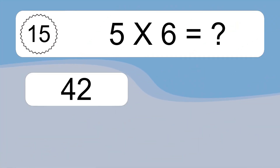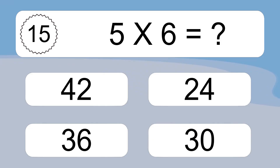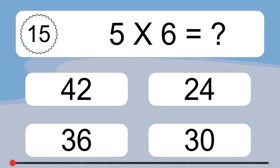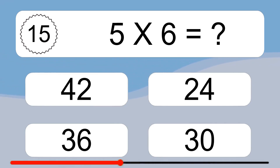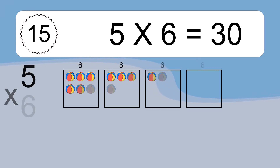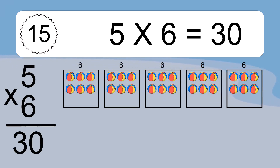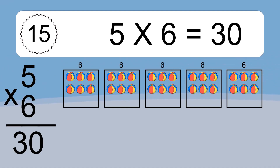5 times 6 equals what? We have 5 boxes, and each box has 6 colorful balls inside. If you count all the balls in all the boxes together, you will have 5 times 6 balls. This equals 30 balls.